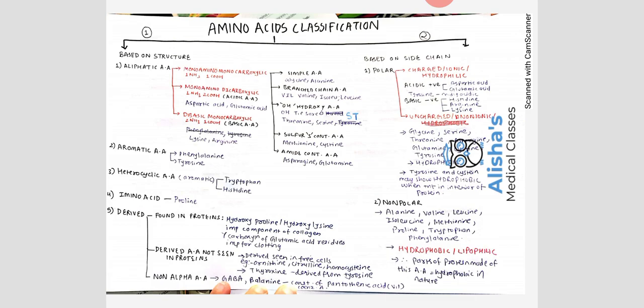GABA is gamma-aminobutyric acid, which is a derivative of glutamic acid. Beta-alanine is a constituent of pantothenic acid, which is a vitamin and coenzyme. In beta-alanine, the amino group is at the beta position, which is why it is referred to as beta-alanine.